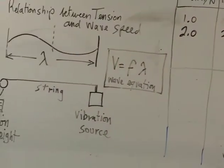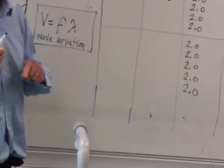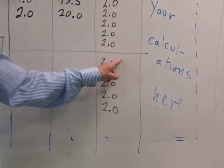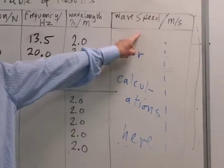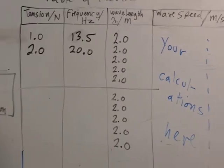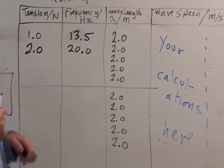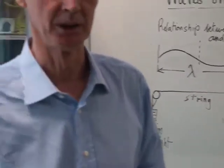We're going to carry on doing that — adding more weights and measuring the frequency. We know that the wavelength is always 2 metres because we did not change the length of the string. You are going to use the wave equation — v = f × λ — to find the wave speed in metres per second for each different tension. I'll complete the experiment, put the data on the board, and you'll be able to see that later on. Wish me luck.